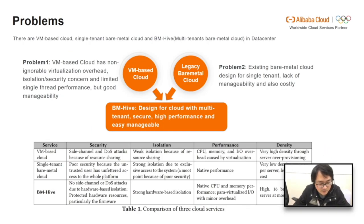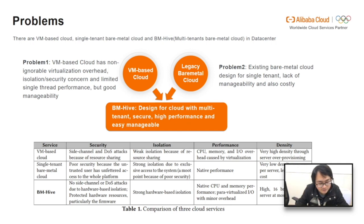Nowadays, there are two major types of instances in data centers and public cloud: VM-based cloud and legacy single-tenant bare metal cloud. We now provide a third one: multi-tenant bare metal cloud. We compare the three types of cloud from density, performance, manageability, isolation, and security. VM-based cloud has better density than the other two — it can support as many as 100 guests in a single server, while XJargon can support up to 16 bare metal guests, which already covers most scenarios.